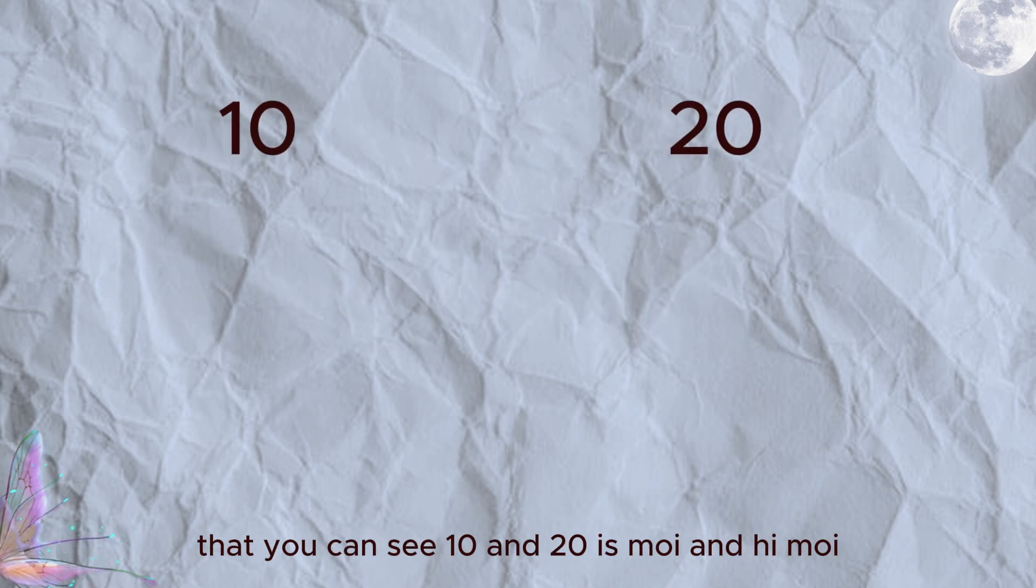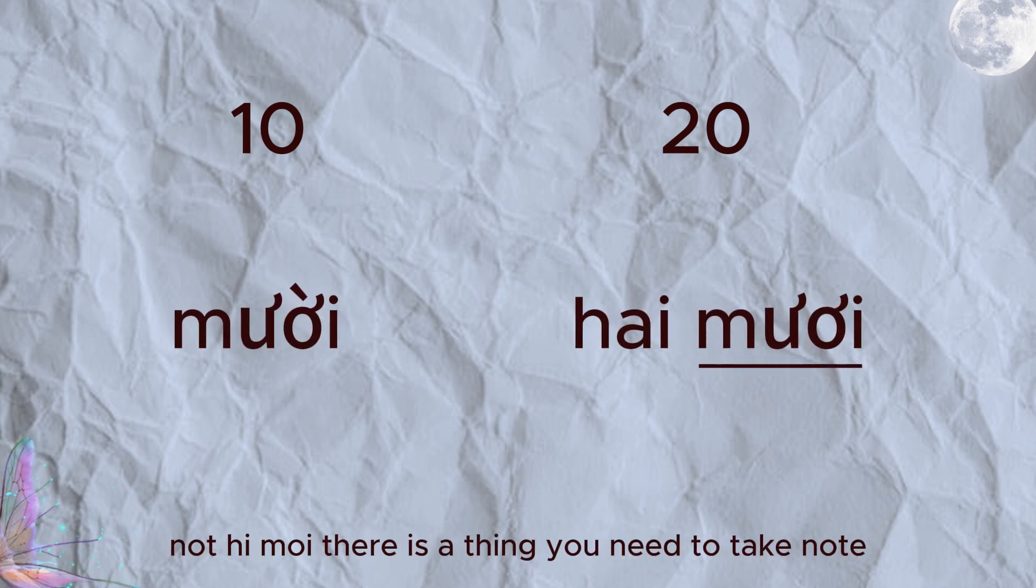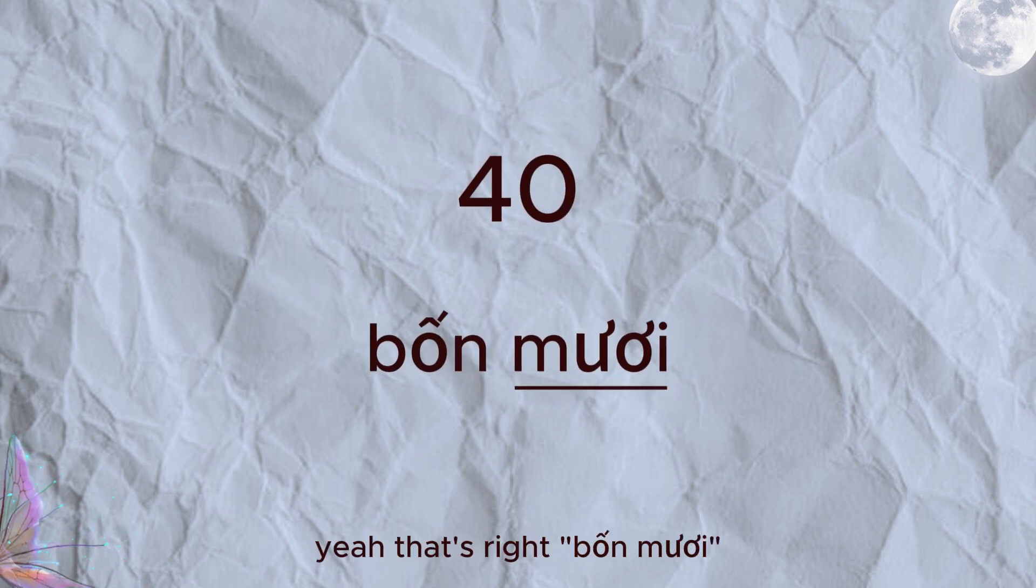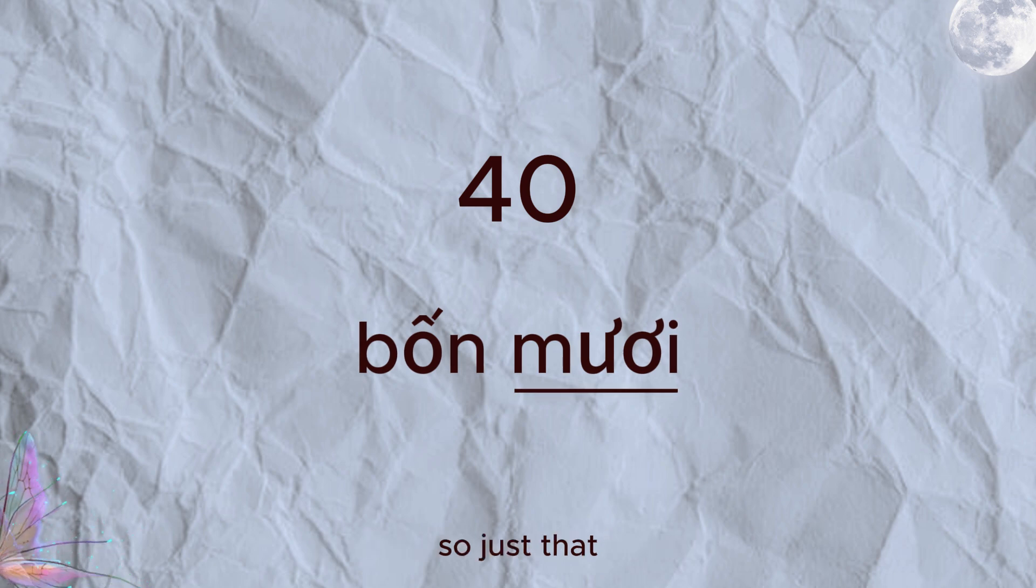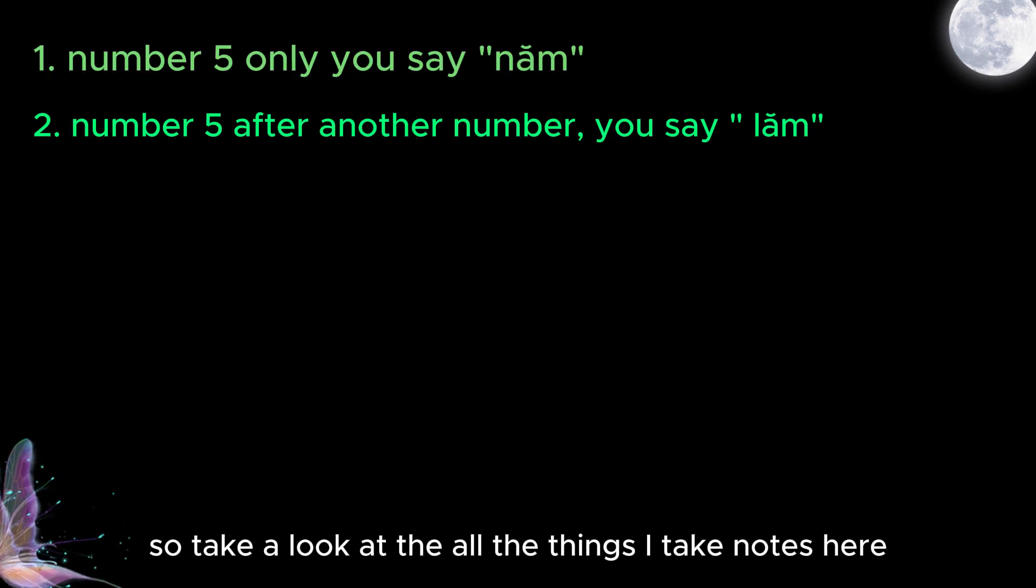The second thing you need to take note is that you can see 10 and 20 is mười and hai mươi, not hai mười. There is a thing you need to take note from 20 and over, you say mươi not mười. So how to say 40? Yeah, that's right, bốn mươi. So just that, you finish this lesson.